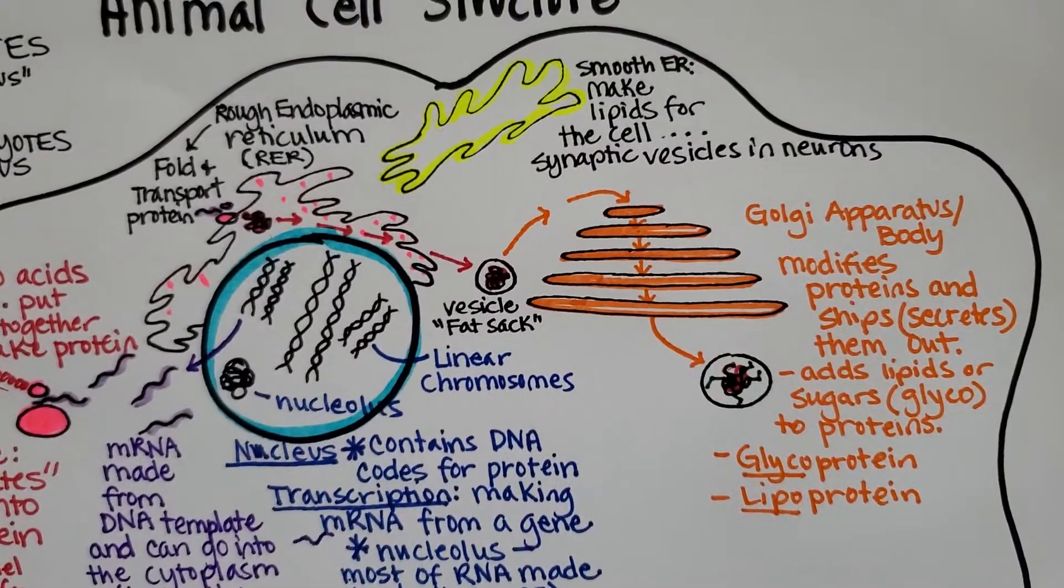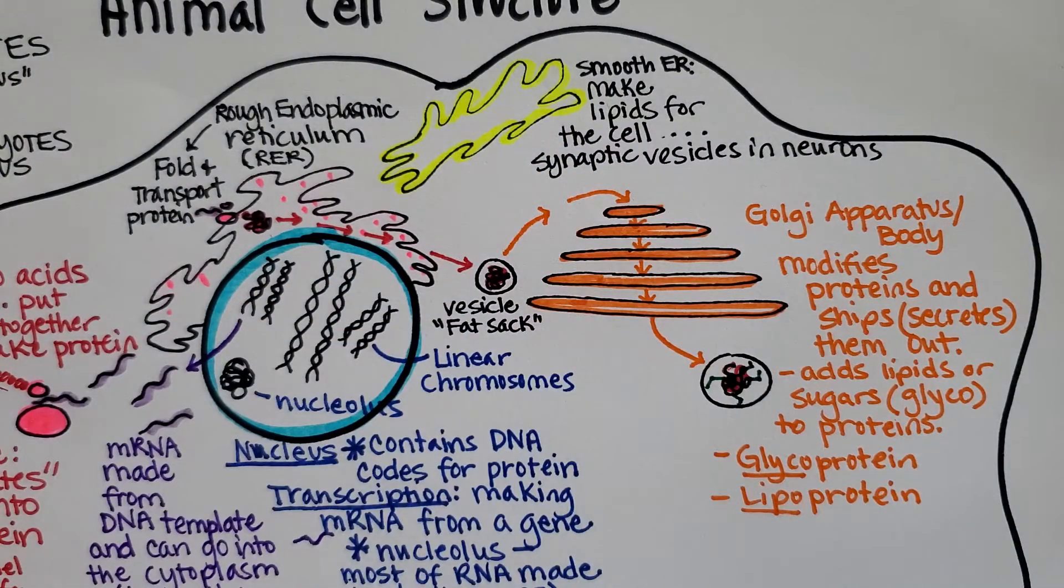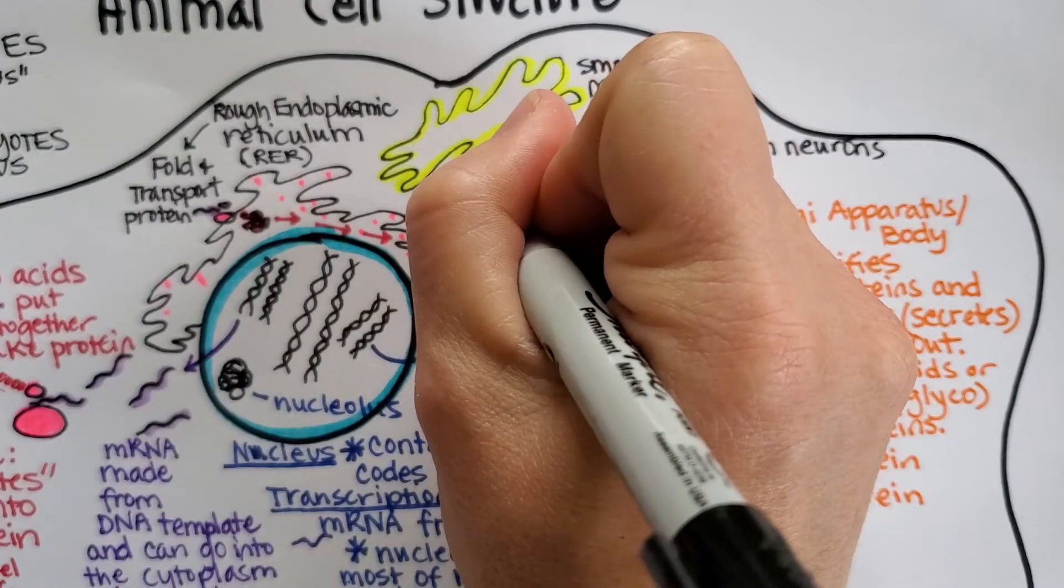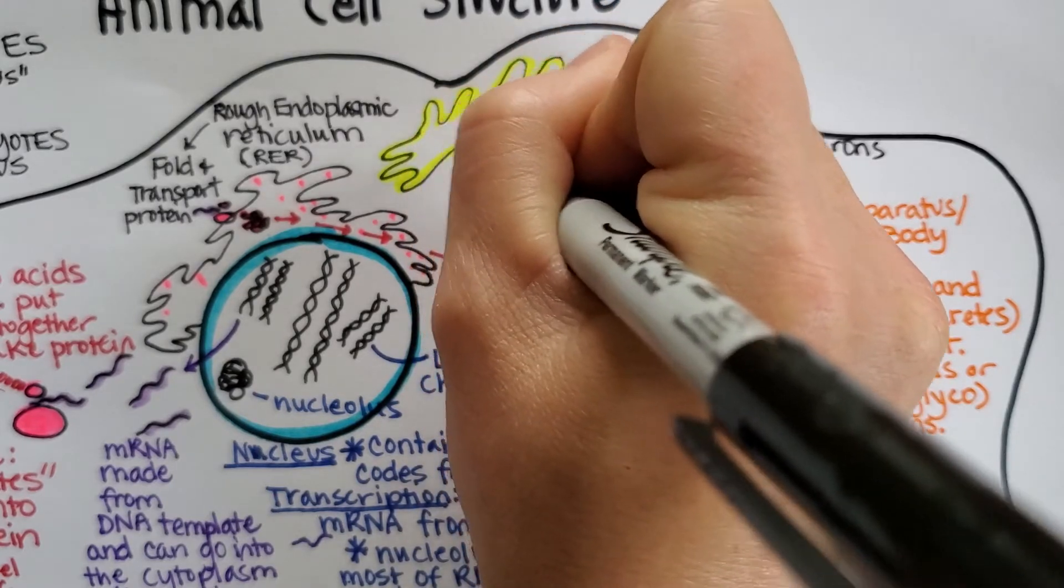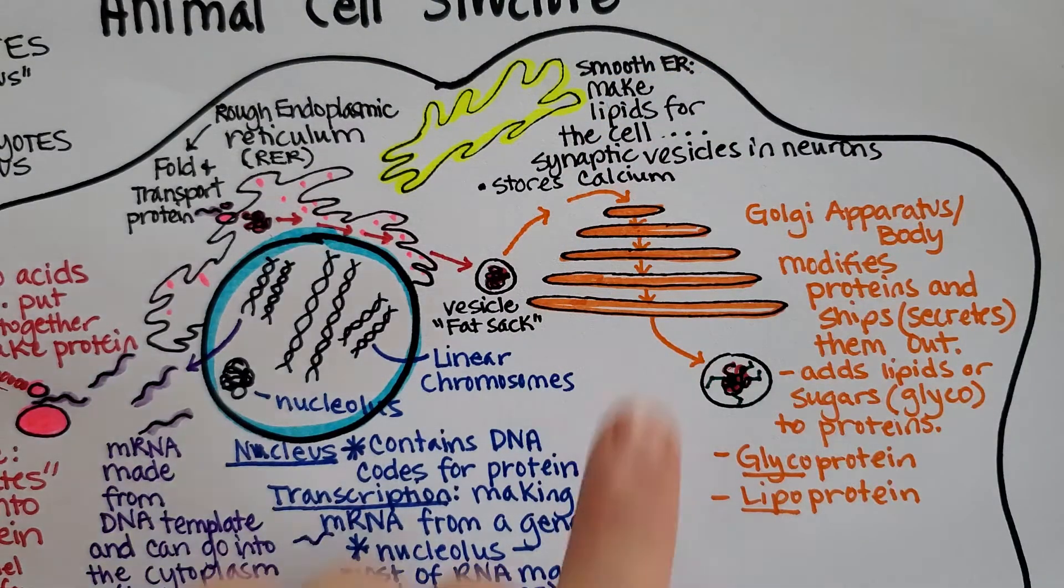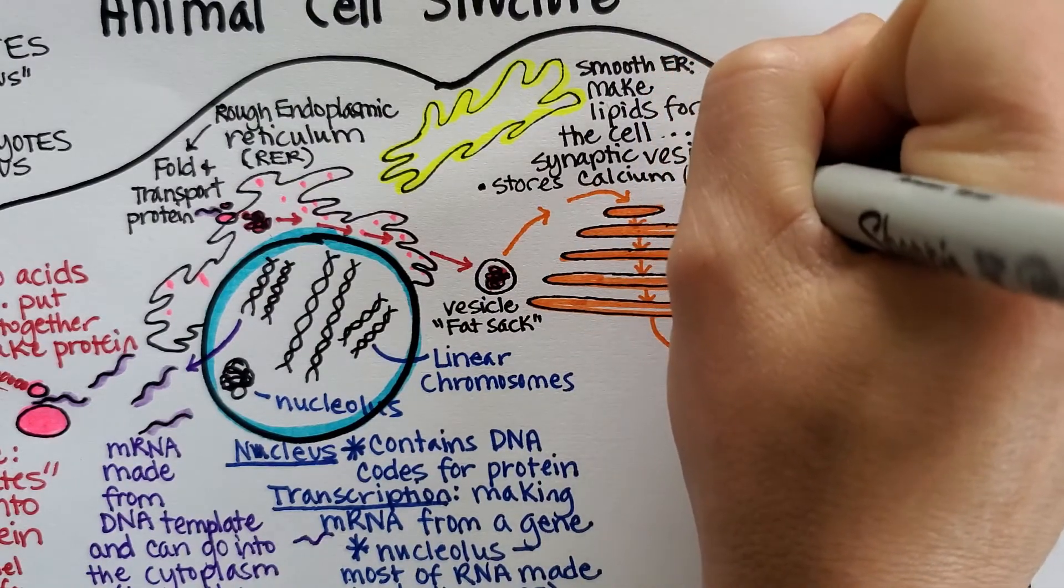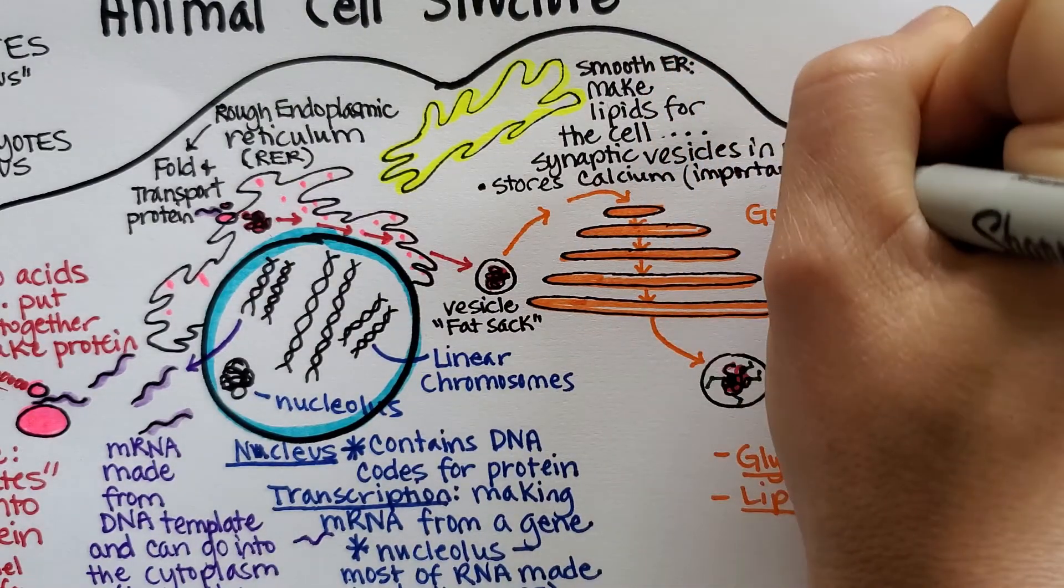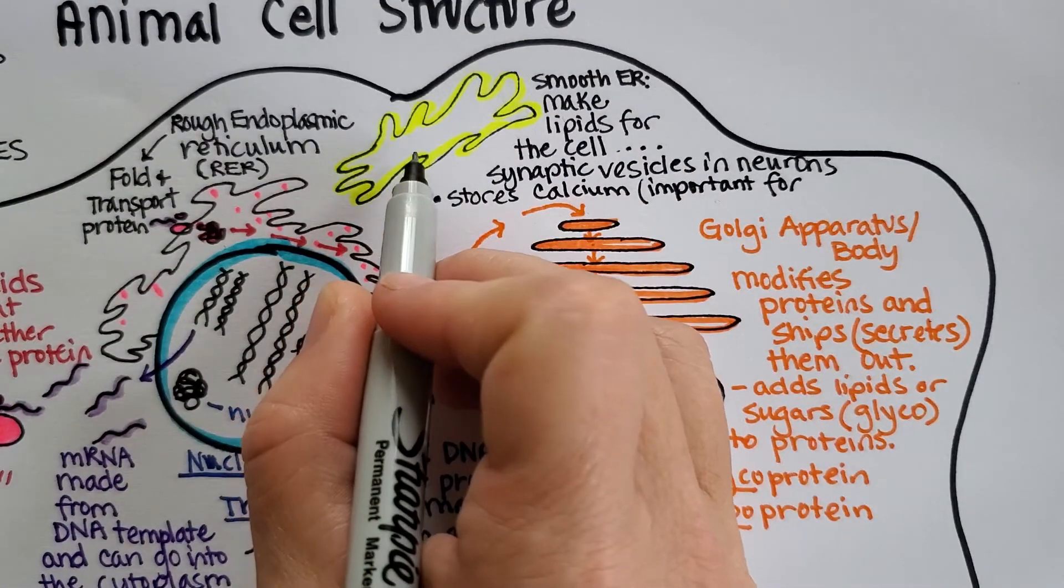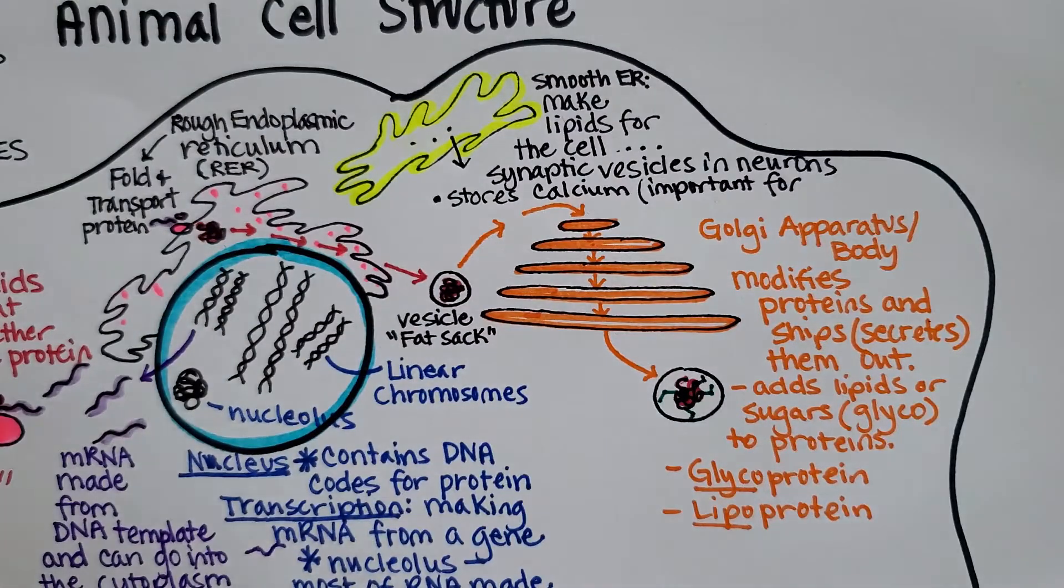There's also the smooth ER and it makes lipids for the cell synaptic vesicles. Another thing about the ER is that it stores calcium. And that stored calcium is going to be really important for muscle contraction. So when you exercise or contract a muscle, the smooth ER lets calcium rush out and cause muscle contraction.